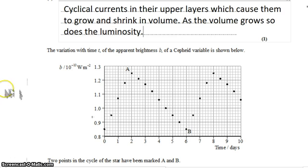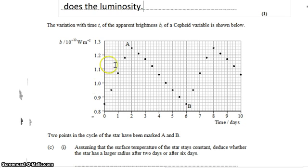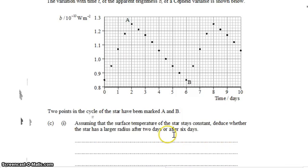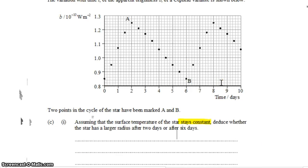The variation with time of the apparent brightness of a Cepheid variable is shown below. We see it growing and shrinking in brightness. Two points on the cycle of the star have been marked A and B. Assuming that the surface temperature of the star remains constant, deduce whether the star has a larger radius after two days or after six days.